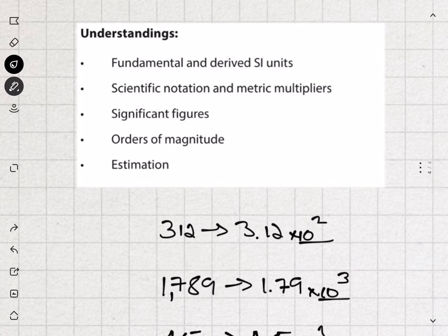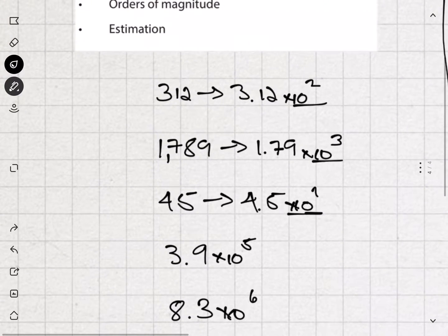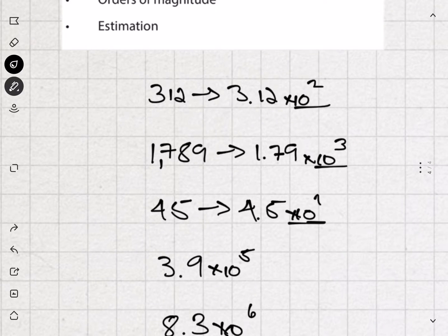The next thing we're going to do is orders of magnitude. This is related to scientific notation and metric multipliers. If you haven't seen those videos, you can go ahead and do that if you need that piece of knowledge. So let's say we've got several numbers here. 312 written in scientific notation is 3.12 times 10 to the 2, and 45 is written as 4.5 times 10 to the 1. All these 'ten to the something' — these are the orders of magnitude.